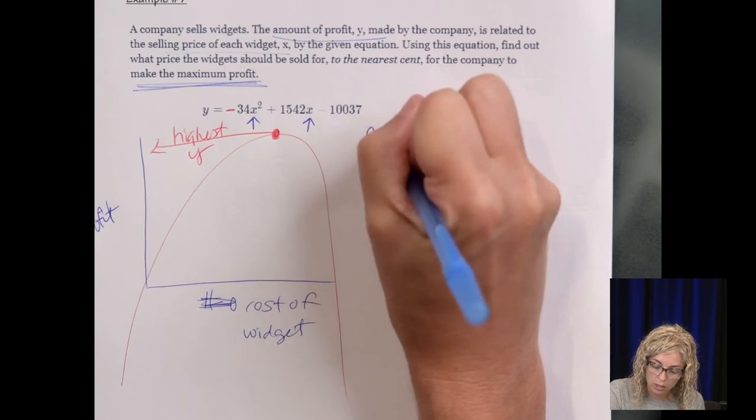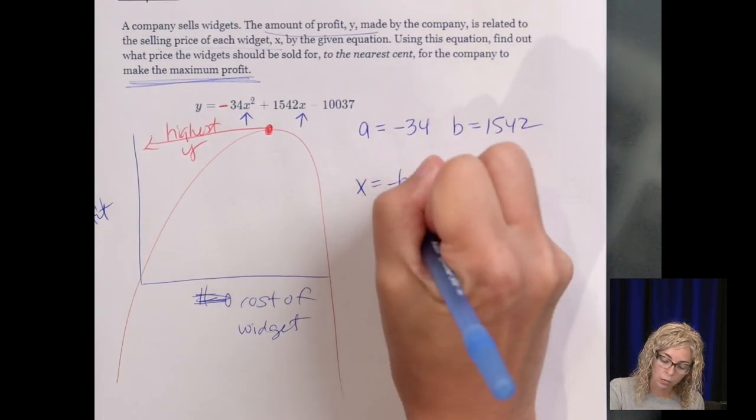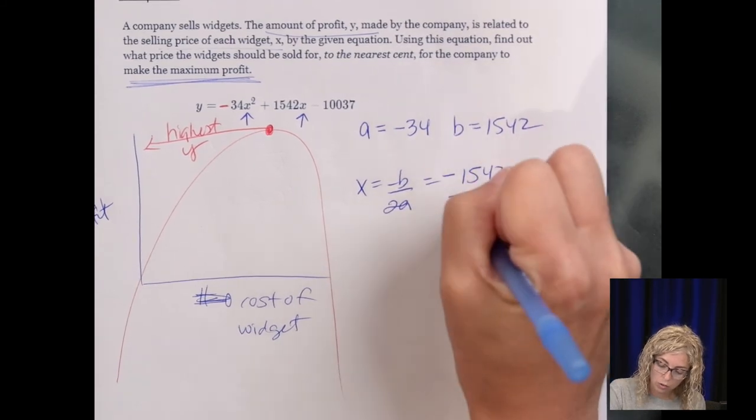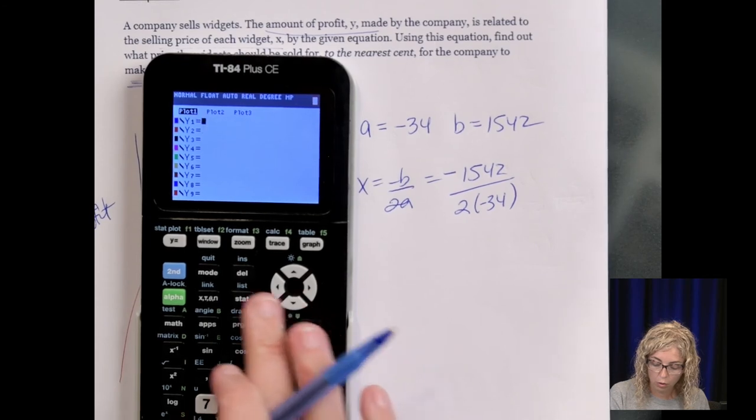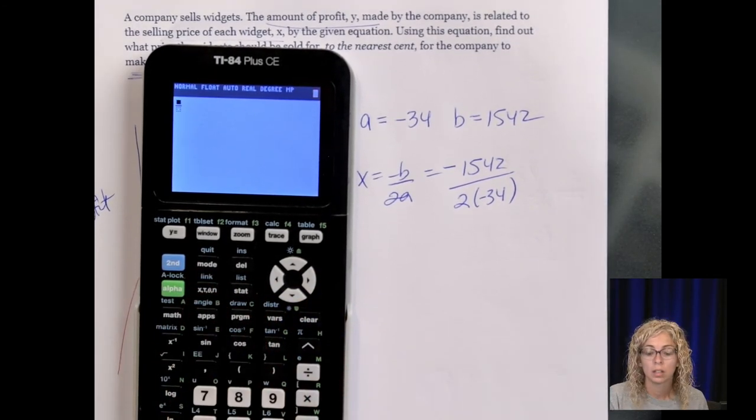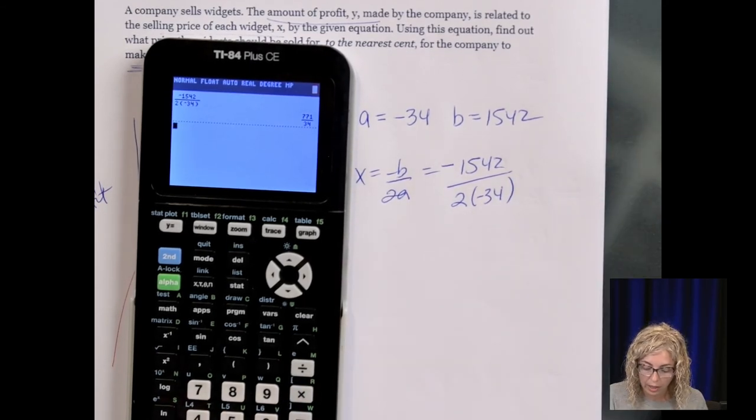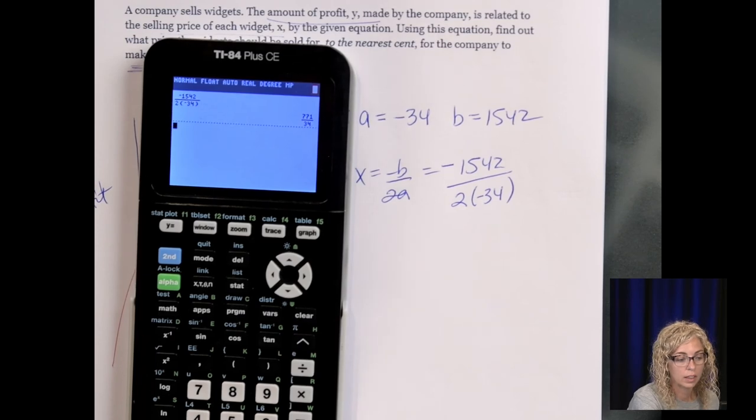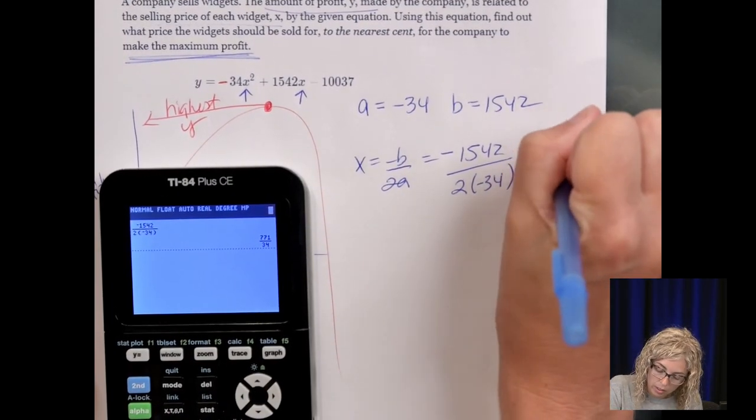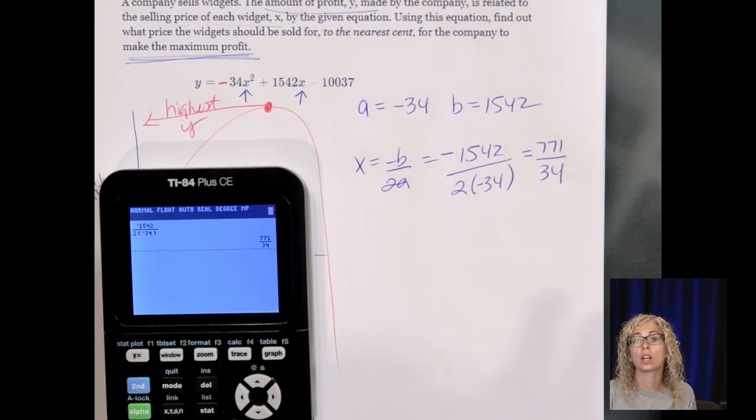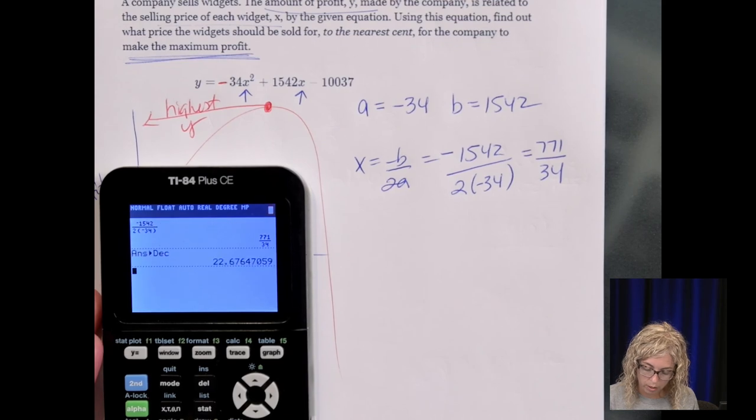Which I need the a value and the b value because it's x equals negative b over 2a. So negative 1542 divided by 2 times negative 34 and you can type, remember you can type that whole fraction in using the fraction key. Go to alpha y equals and so negative 1542 over 2 times negative 34 and we get that decimal. Okay so in getting that decimal, see how it says the nearest cent, I'm going to leave it as 771 over 34 and then just use it on my calculator for the x.